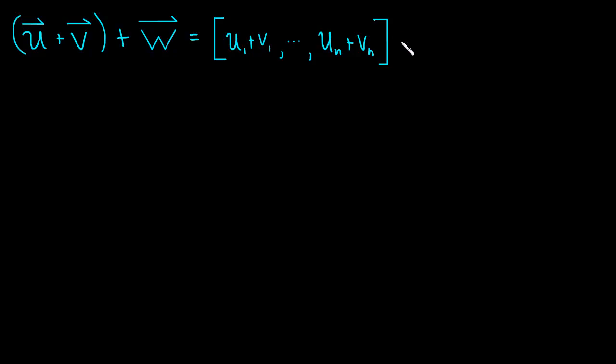Plus w, so plus w1, and again, I'm going to leave off the second one and just write it like that. Okay, well, now we're just adding two vectors together. And we know how to do that. We take the first component of the first vector, which is u1 plus v1. That's the first component of that vector. And then we add the first component of the other vector, which is just w1.